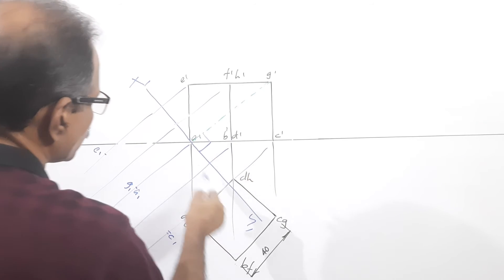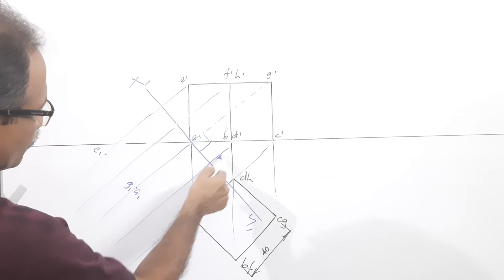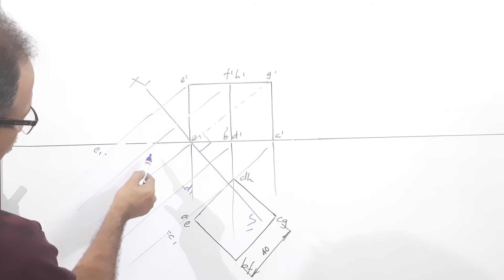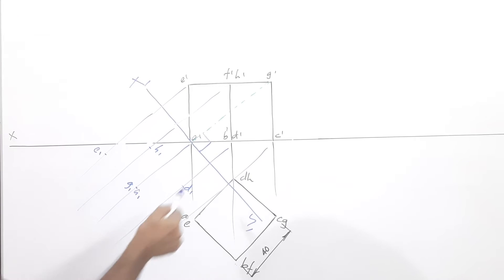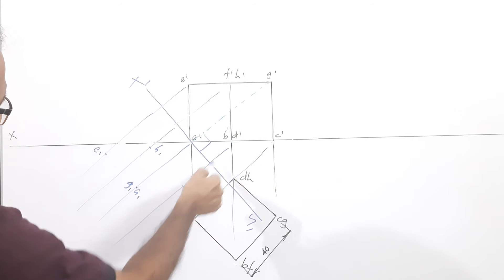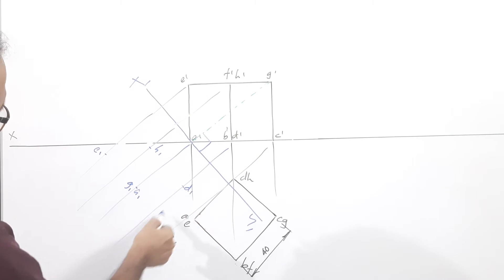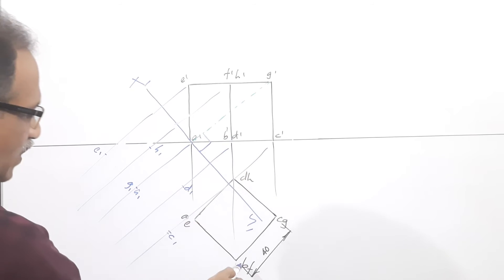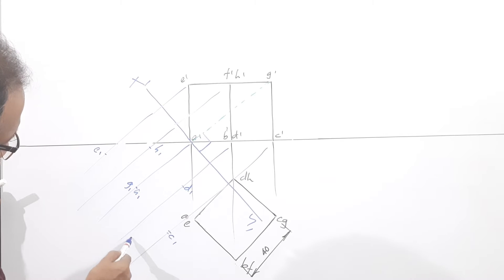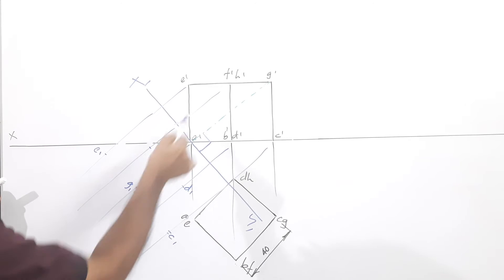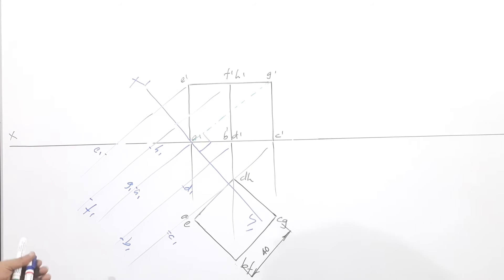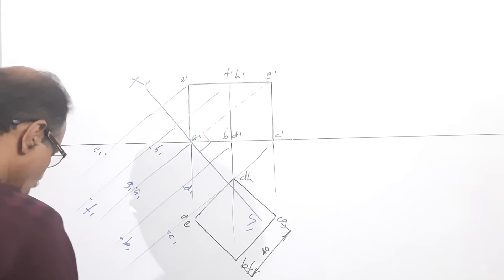D and H are this much below xy — mark d1 and h1 on their projectors. B and F are this much below — mark b1 and f1. You have now got all 8 points of the cube.